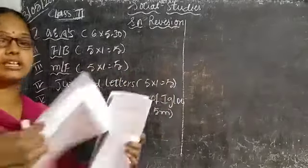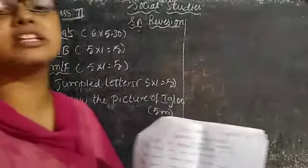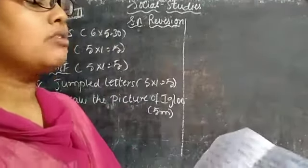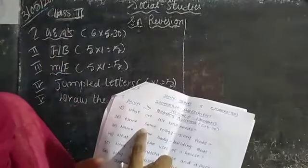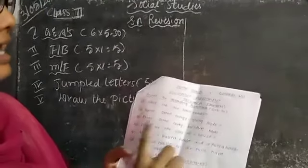Now coming to the first section, children. First section, what I do? Question answers, six, six into five is thirty. Each carries five marks at all. So what is the first question? Already the answers I have given in the class. Isn't it children? What is the first one? What are our basic needs?